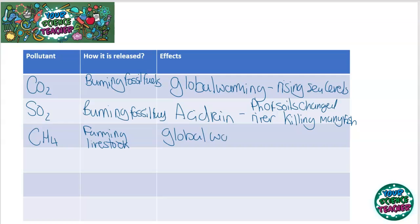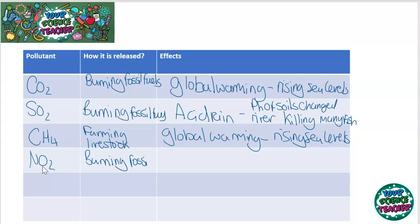Another pollutant is nitrogen dioxide, which gets into our atmosphere through burning fossil fuels. Once in our atmosphere it can be incredibly bad because when we breathe it in it can cause many respiratory problems. An example of one respiratory problem it can cause is bronchitis.